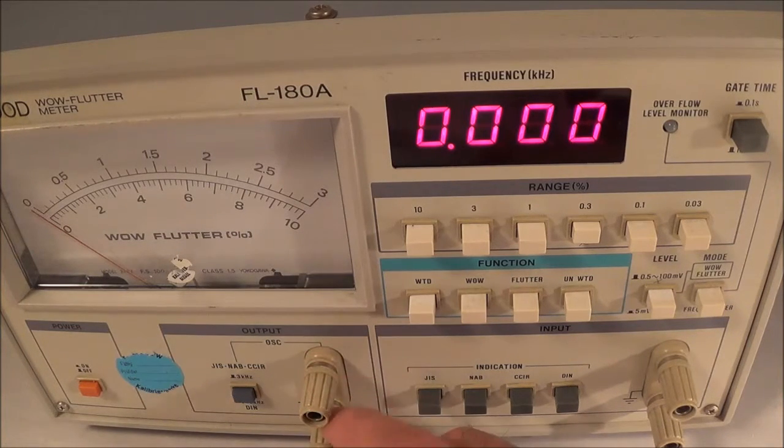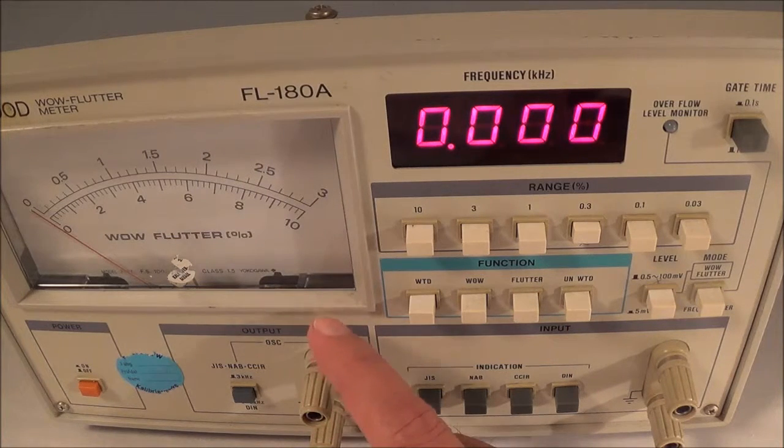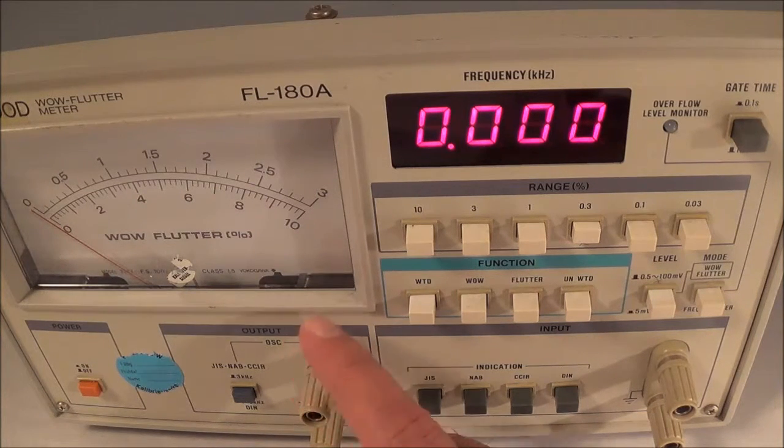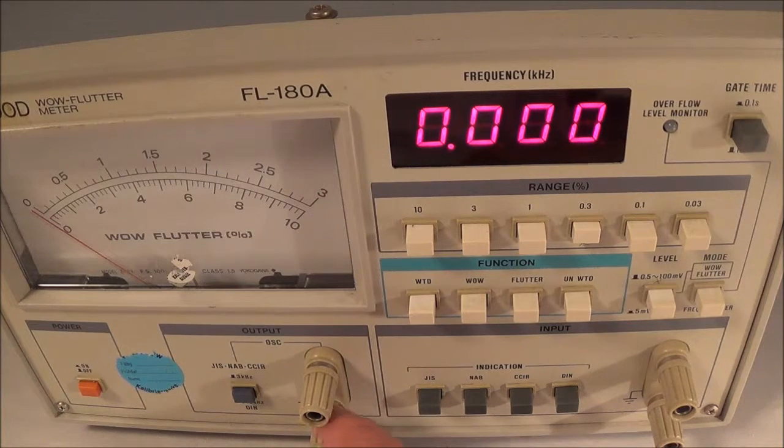Here you have two oscillator output settings. One is for 3000 hertz and the other one is for 3150 hertz. That way you can make your own tapes for testing.